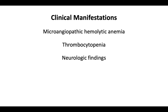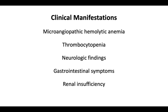Microthrombi in the gastrointestinal tract can lead to gastrointestinal symptoms such as abdominal pain, nausea, vomiting, or diarrhea. Microthrombi deposition in the kidney can lead to renal insufficiency. While renal insufficiency can be seen in TTP, anuria and acute renal failure are rare. In a large series of TTP patients, the median serum creatinine was 1.3.